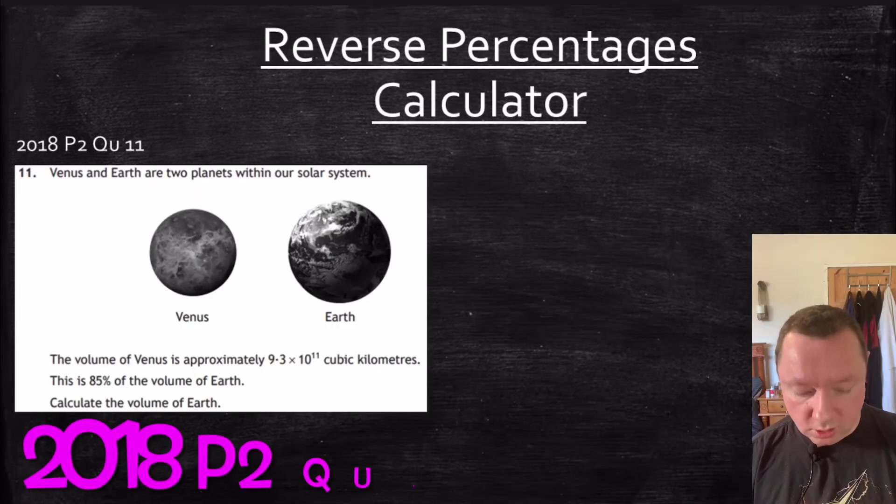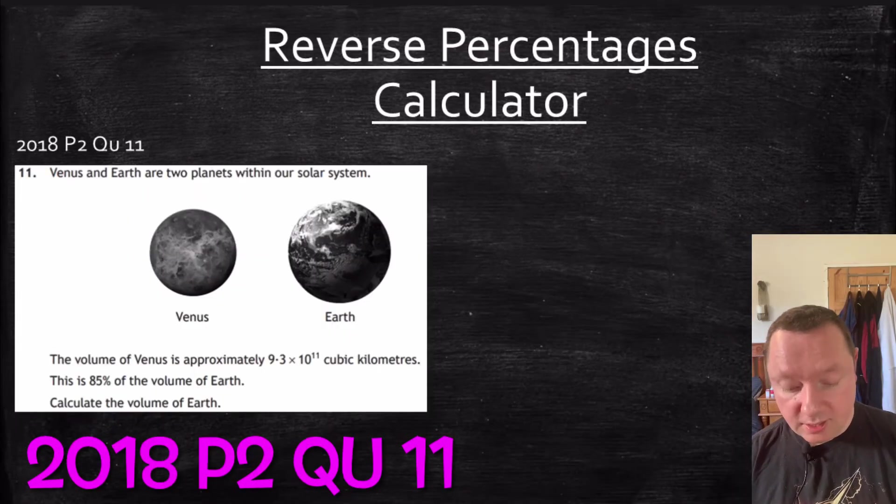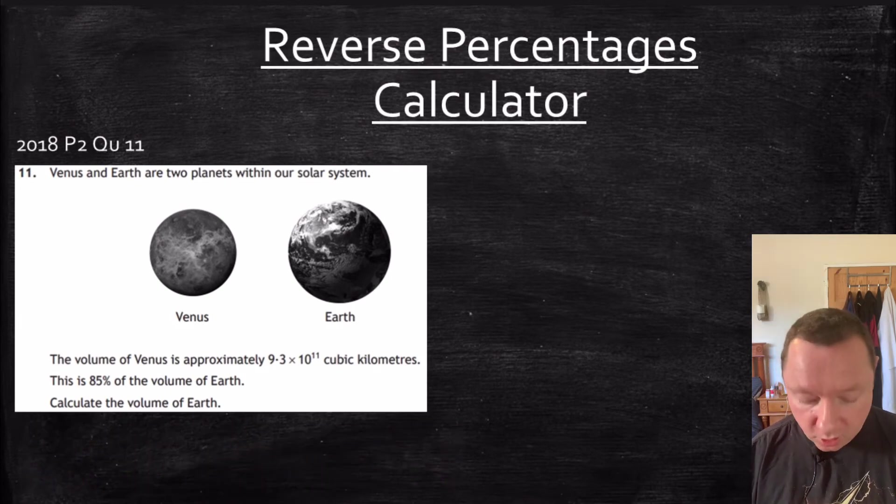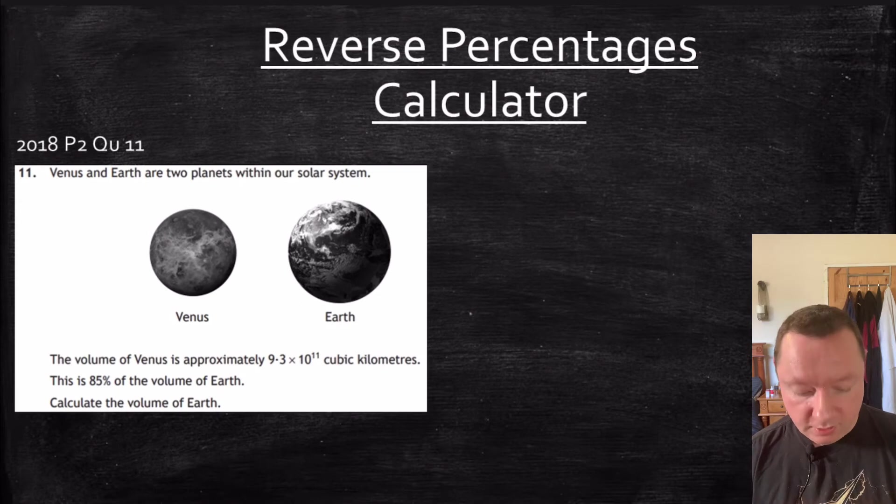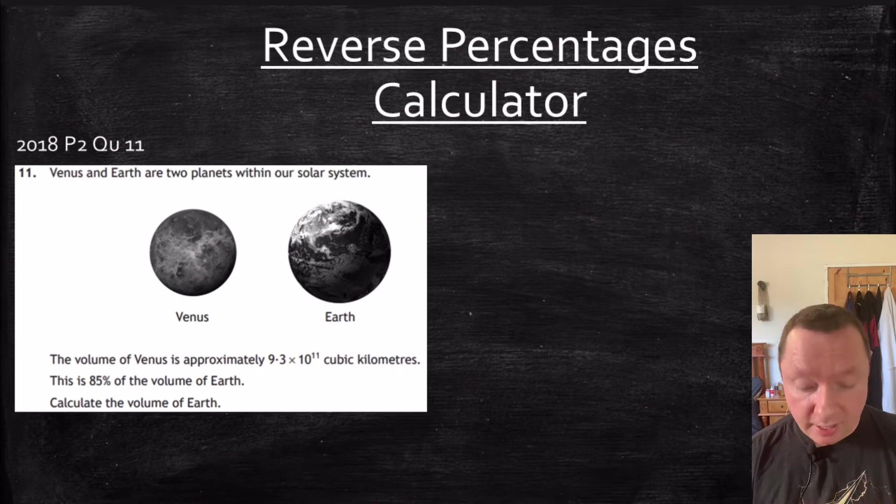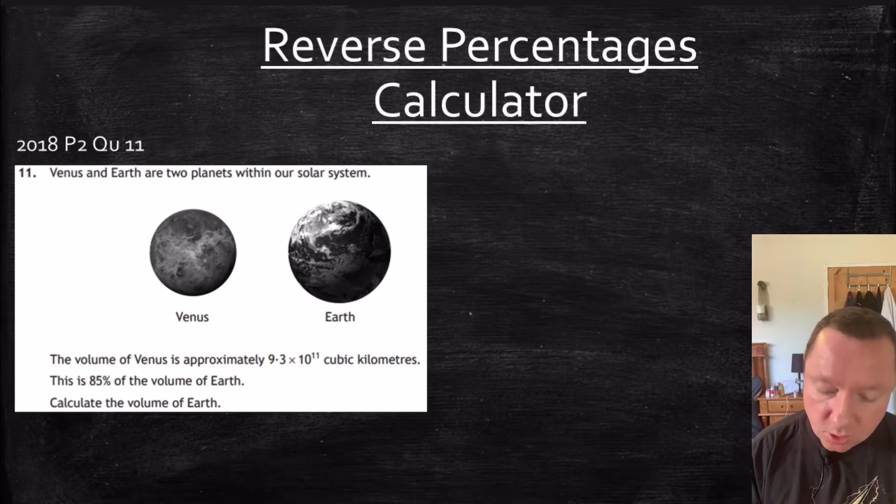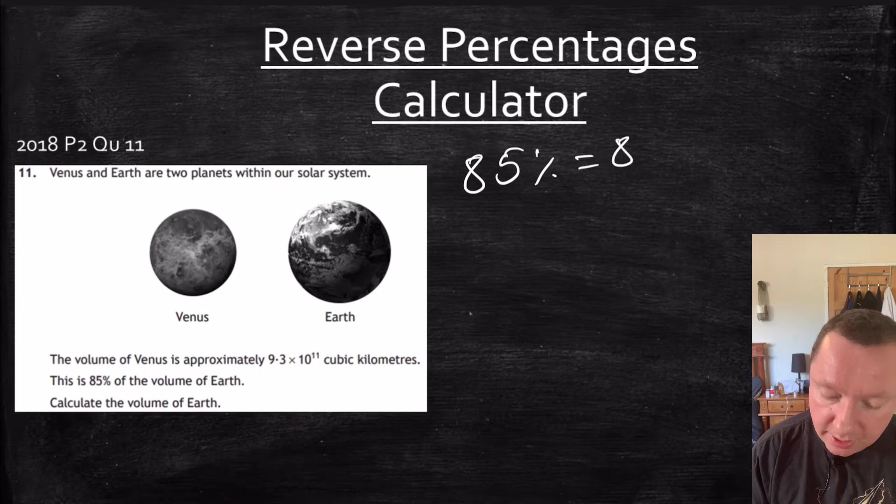Venus and Earth are two planets in our solar system. The volume of Venus is 9.3 times 10 to the 11 cubic kilometres. This is 85% of the volume of Earth. Calculate the volume of Earth. Notice it does not say it went down by 85%. It's just telling you it is 85% of the volume of Earth. So 85% is our multiplier. So 85% change that to a decimal. 85 divided by 100. 0.85.